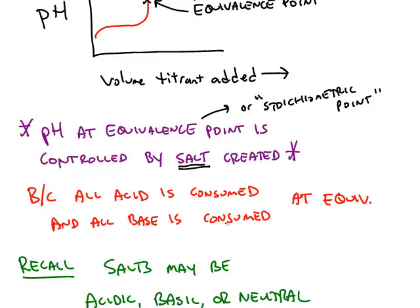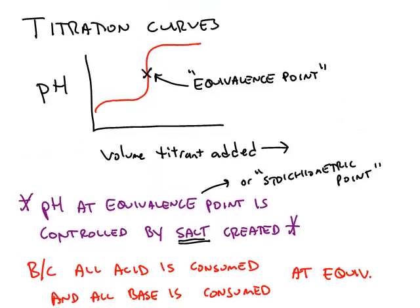And all of the base that you had is also consumed. So your titrant could either be an acid or a base. In this picture, we're starting off low and we're going higher, so as we add more titrant, this must be a base that we're adding to make the pH go up.